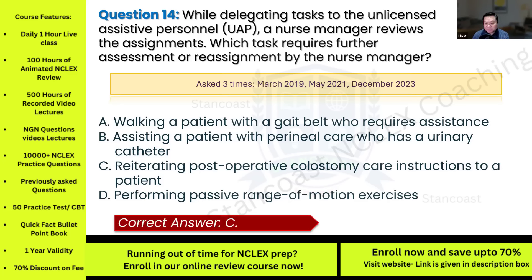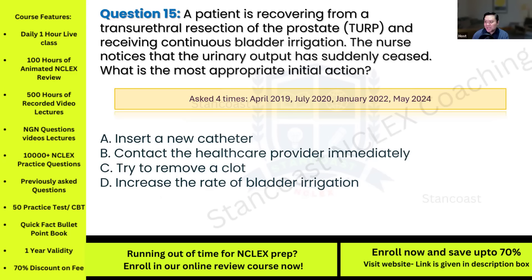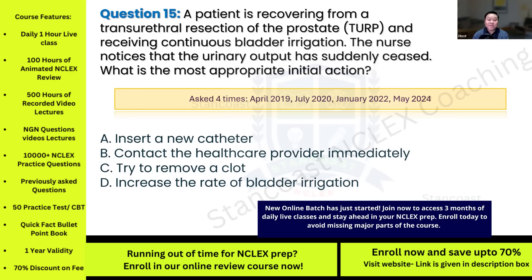Question fifteen: A patient is recovering from a transurethral resection of the prostate (TURP) and receiving continuous bladder irrigation. The nurse notices that urinary output has suddenly ceased. What is the most appropriate initial action? This has been asked four times. Options: A) insert a new catheter; B) contact the healthcare provider immediately; C) try to remove a clot; D) increase the rate of bladder irrigation.